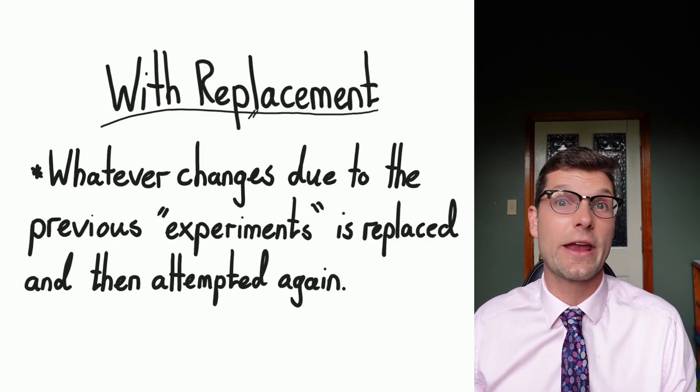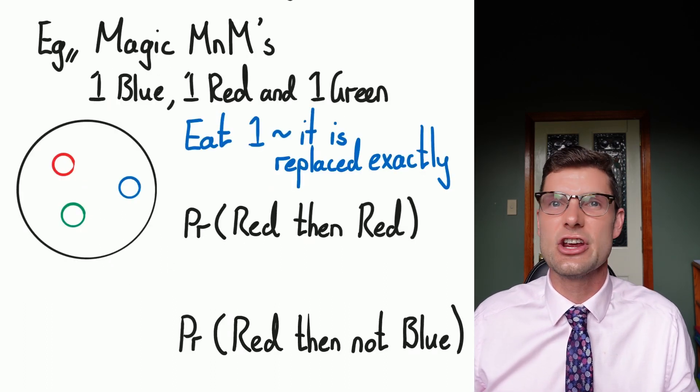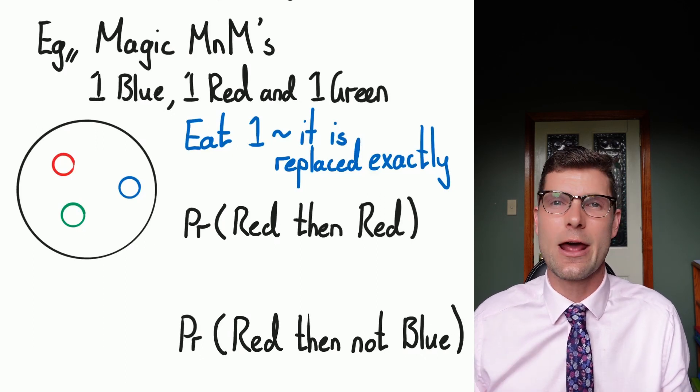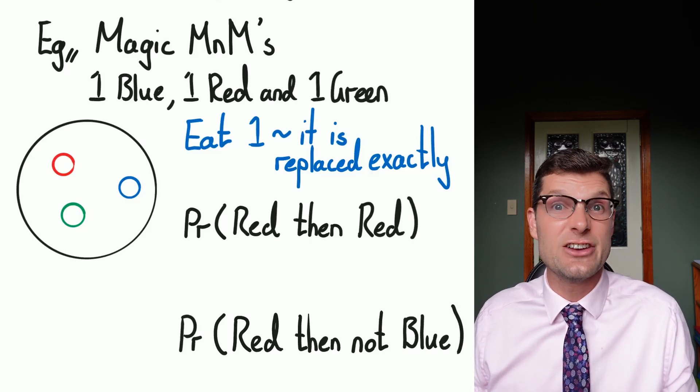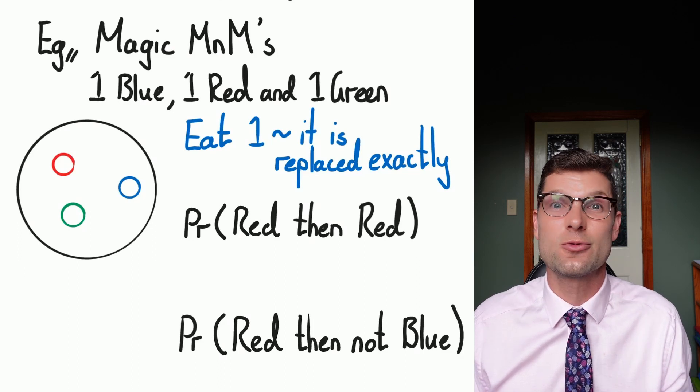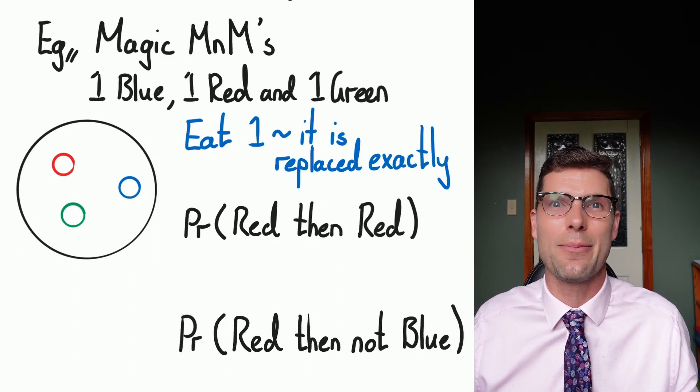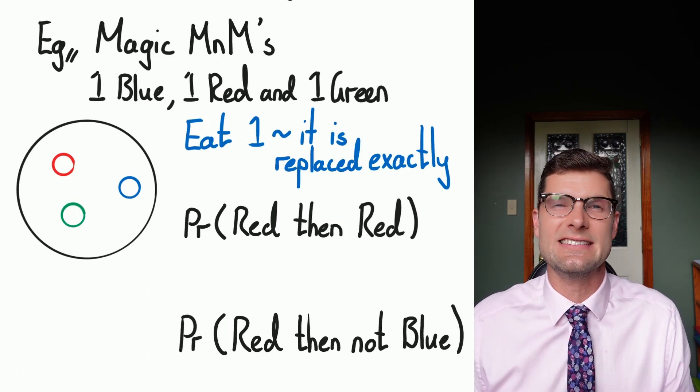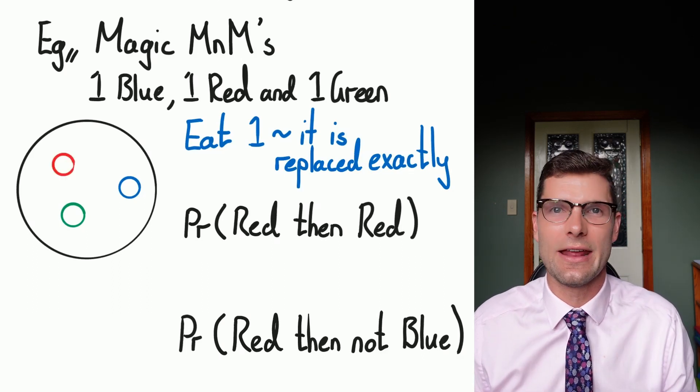To see how we can work out problems using this, we're going to look at an example here. So this is what I call magic M&Ms. I've got three M&Ms in a bag - I'm going to pick one out randomly. The reason they're magic M&Ms is because every time you pull one out and eat it, it just replenishes. That exact same color pops back in. I want to work out the probability that I get a red M&M, eat it, and then it pops back in and I get another red one again.